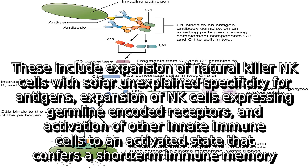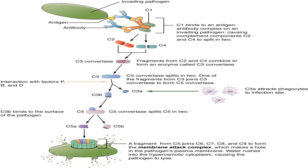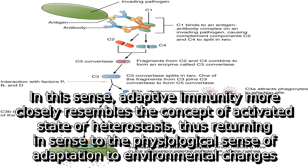These include expansion of natural killer (NK) cells with so far unexplained specificity for antigens, expansion of NK cells expressing germline-encoded receptors, and activation of other innate immune cells to an activated state that confers a short-term immune response. In this sense, adaptive immunity more closely resembles the concept of activated state or heterostasis, thus returning in sense to the physiological sense of adaptation to environmental changes.